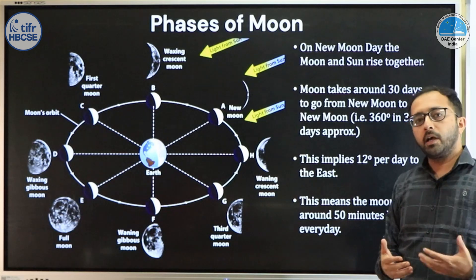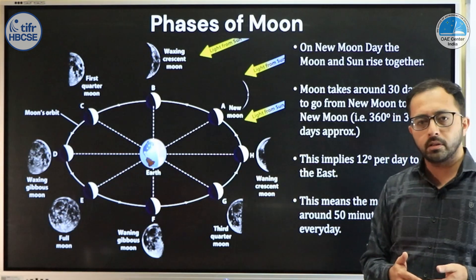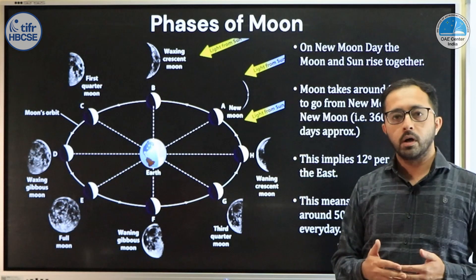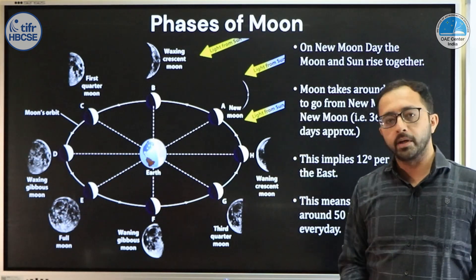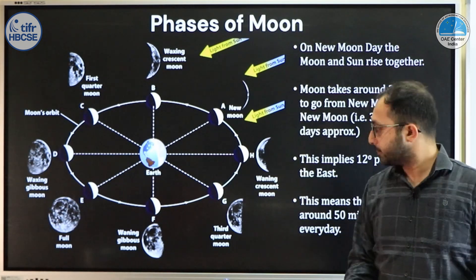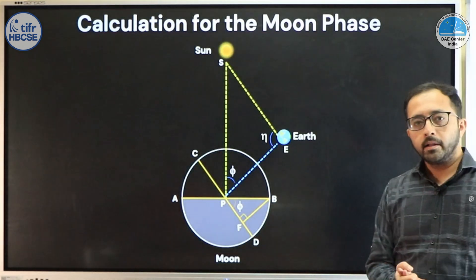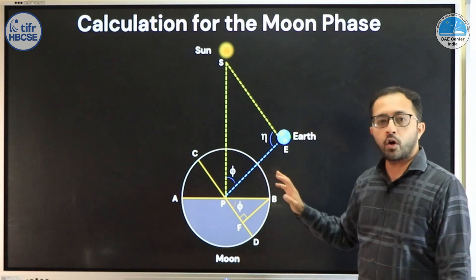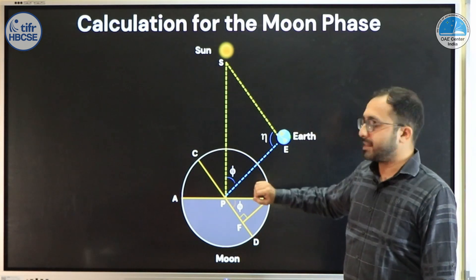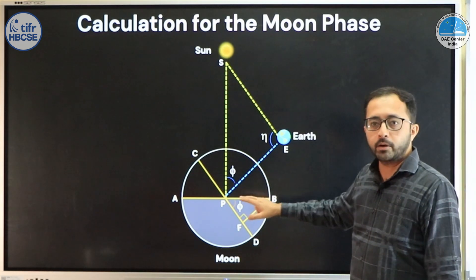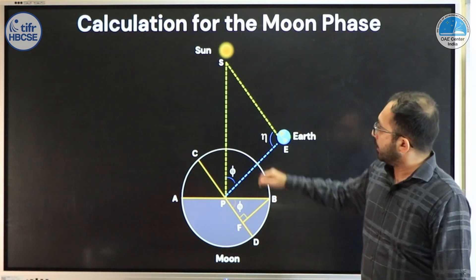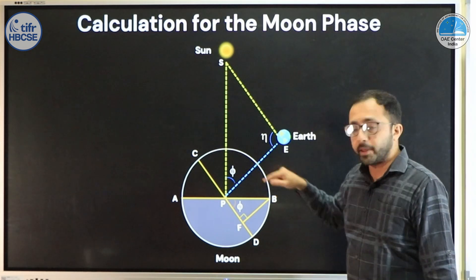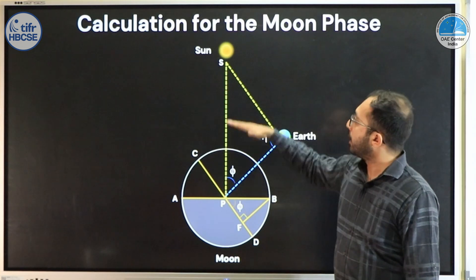Now let us see how we can calculate the phase — a simple calculation about what fraction of the moon will be illuminated as seen from the earth. Let us consider this image: you see the sun at the top, earth to the right, and a zoomed-in image of the moon. The sun is at a very far distance compared to the distance between earth and the moon. The line SP joins the moon and the sun.